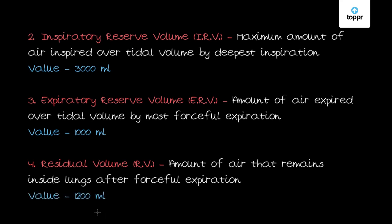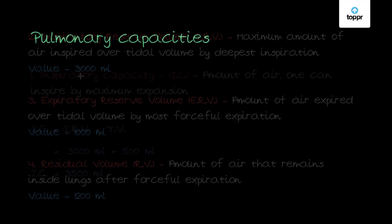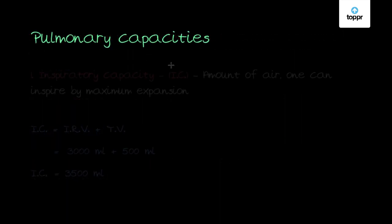We have now seen the four pulmonary volumes, which define the capacity of our lungs. Moving forward, we will see the pulmonary capacities. Pulmonary capacities are not measured directly like the pulmonary volumes. Instead, they talk about the combination of two or more types of pulmonary volumes — they are measured by the sum of pulmonary volumes. Pulmonary capacity is again of four types.